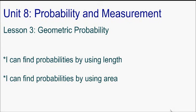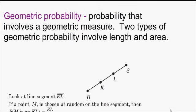Your two objectives for this lesson are define probabilities by using length and define probabilities by using area. So geometric probability involves a geometric measure, and two types of geometric probability involve length and area.